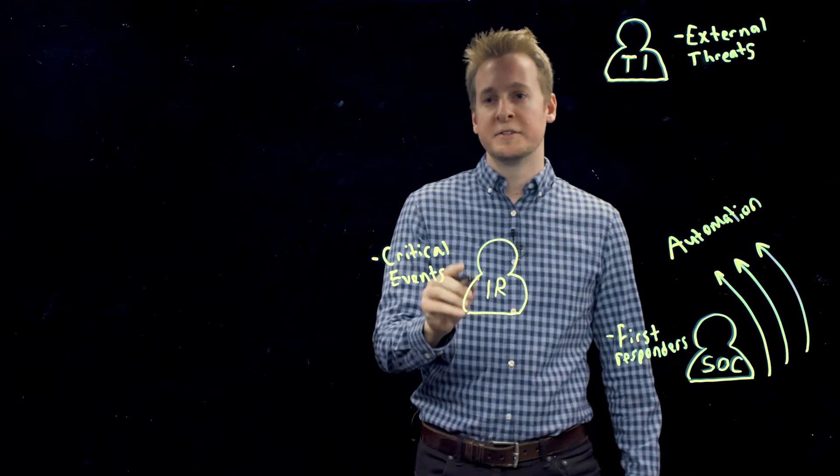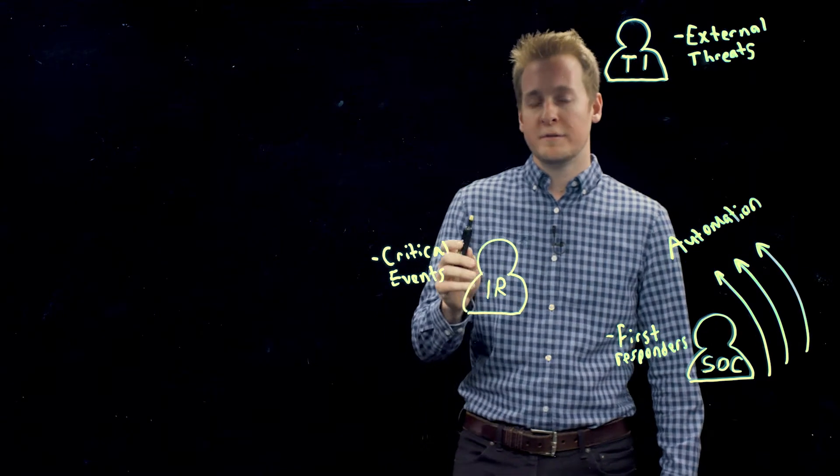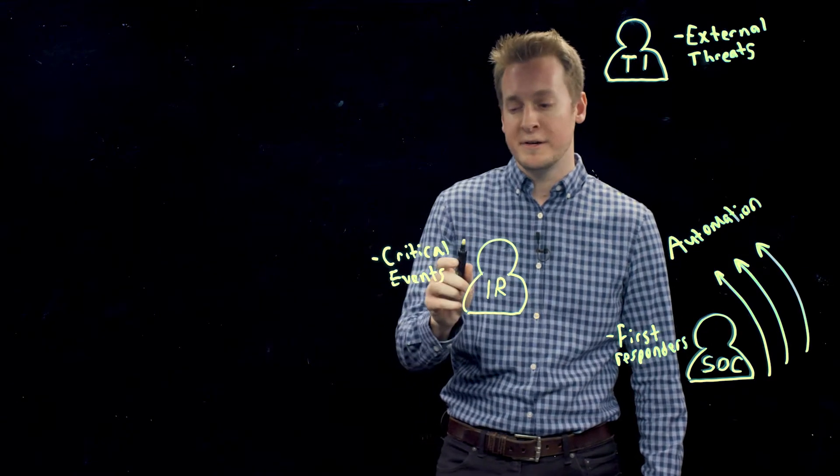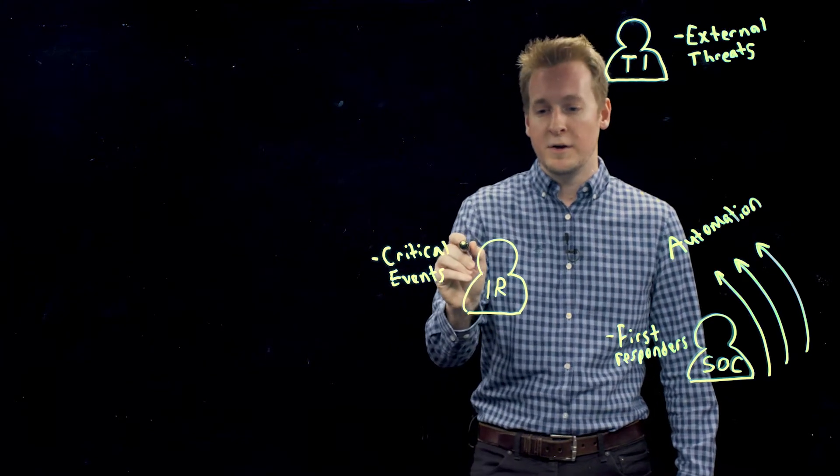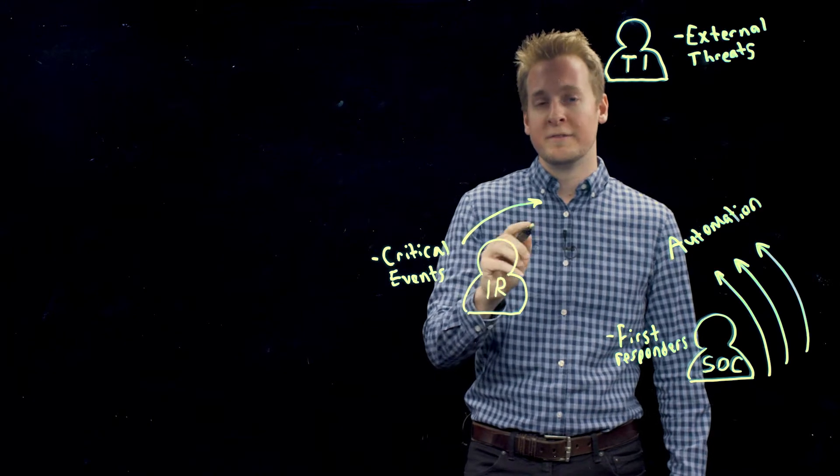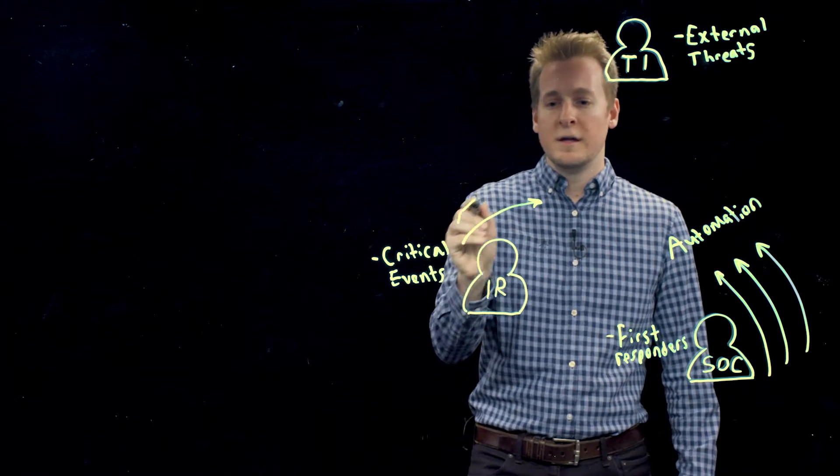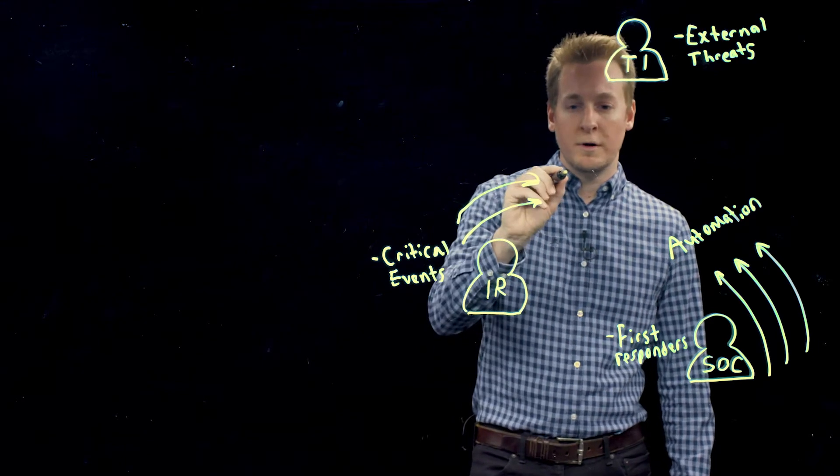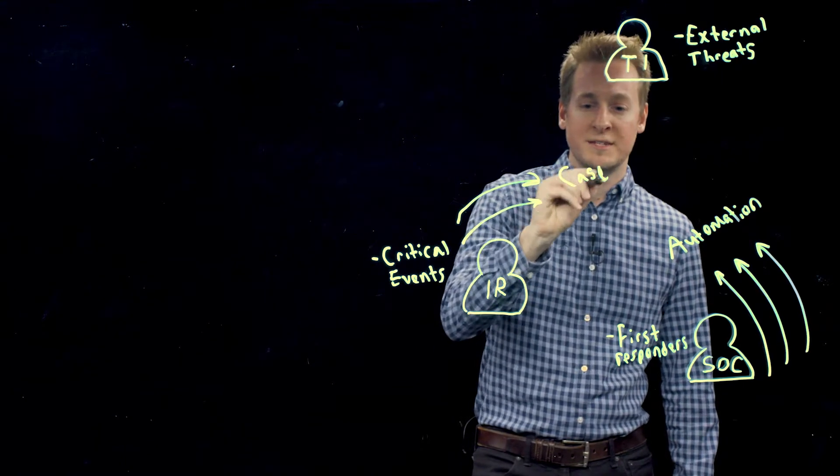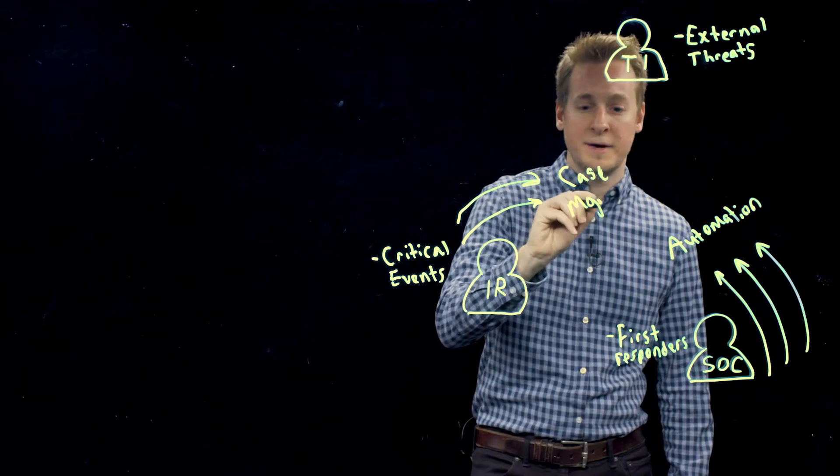Next you have your incident response team. These are the folks handling the critical security events and the escalations from the security operations team. They also have their own event data to keep track of. They have case management needs, so they need to record all this information and all the steps that they take in a case management tool.